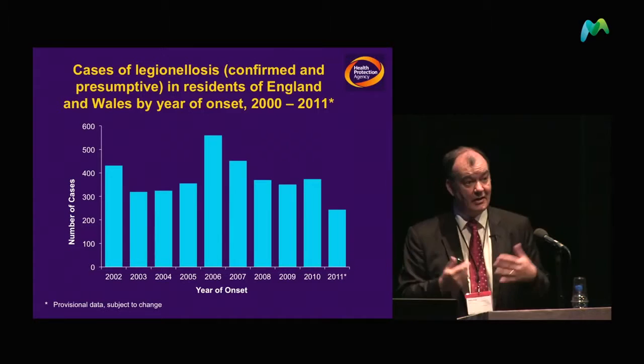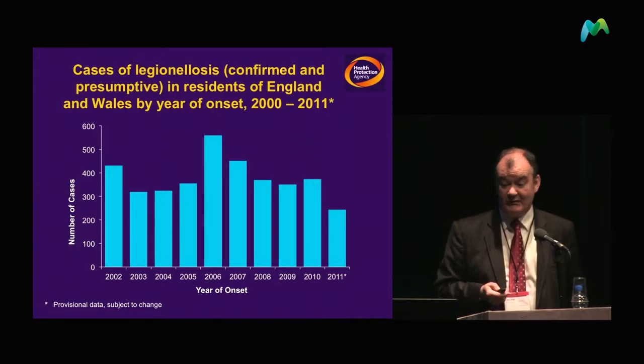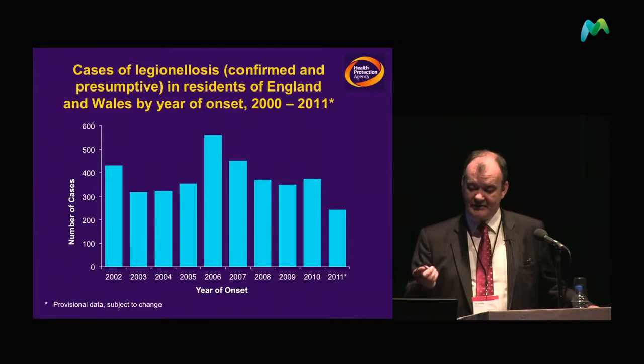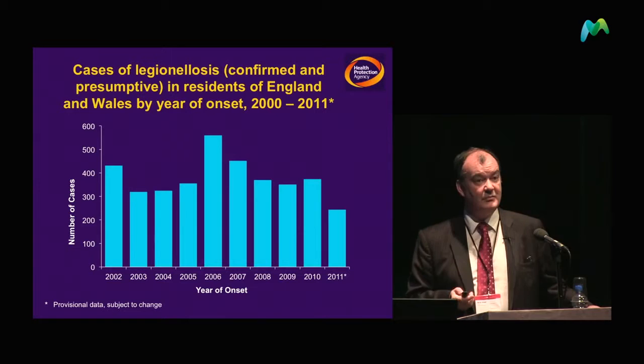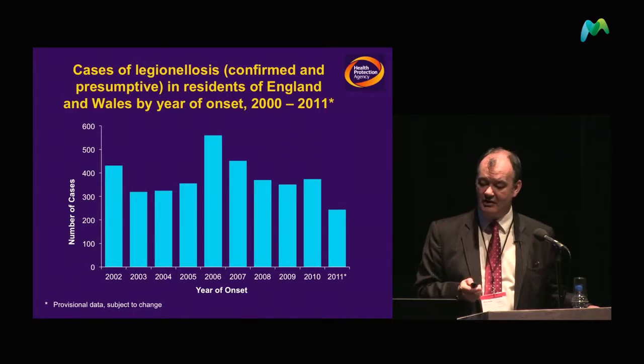These are the cases of Legionella — confirmed and presumptive — and you'll see that up until about 2010, we were getting about 350 cases reported each year. But for some reason I don't fully understand, we saw a sudden drop in the number of cases in 2011. These seem to be in the community-acquired category — the travel-associated and nosocomial cases remained the same.